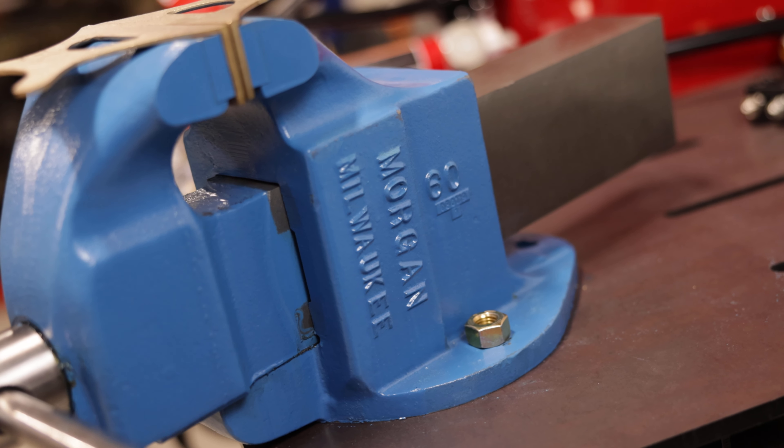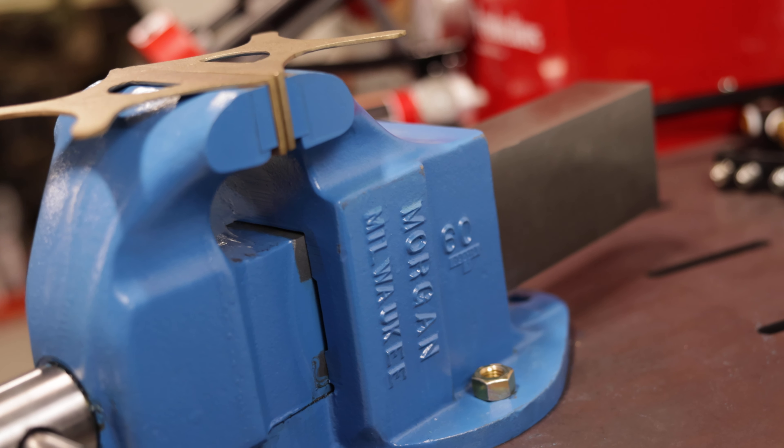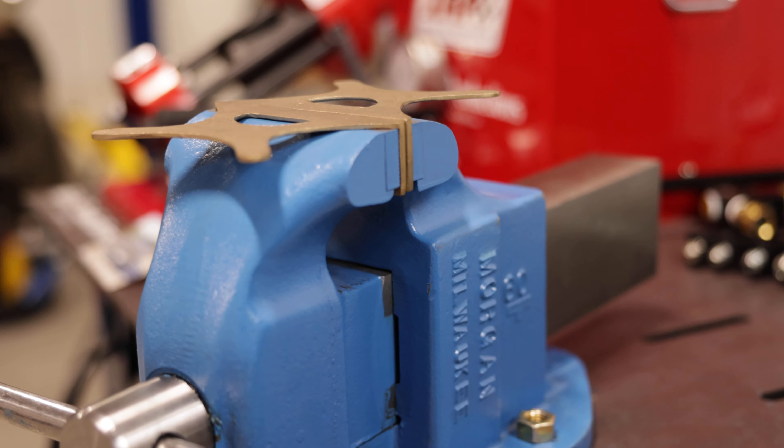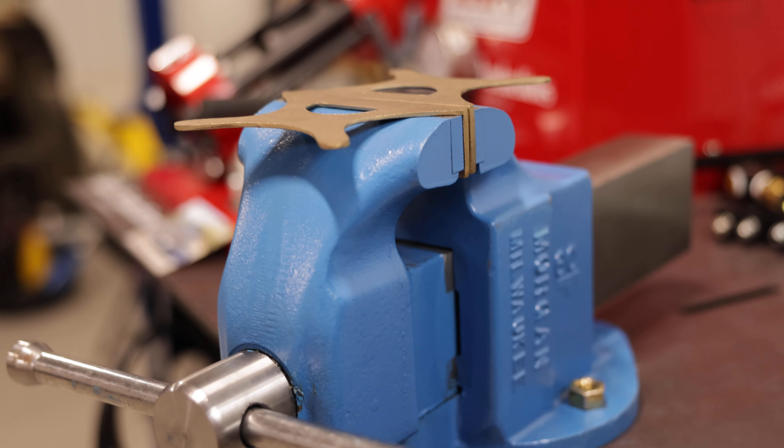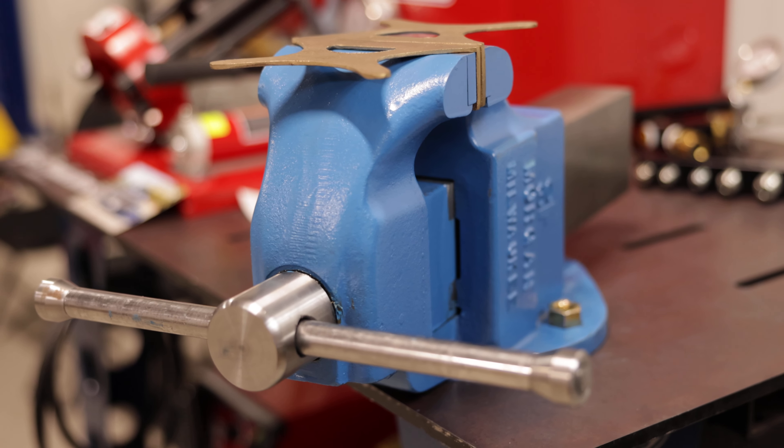We just picked up this Morgan Milwaukee 60. This is a six inch jaw machinist vice and I gotta tell you this thing is an absolute work of art.